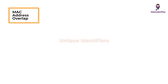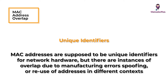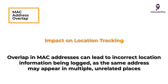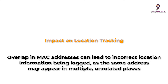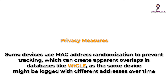MAC address overlap — Unique identifiers: MAC addresses are supposed to be unique identifiers for network hardware, but there are instances of overlap due to manufacturing errors, spoofing, or reuse of addresses in different contexts. Impact on location tracking: overlap in MAC addresses can lead to incorrect location information being logged, as the same address may appear in multiple unrelated places. Privacy measures: some devices use MAC address randomization to prevent tracking, which can create apparent overlaps in databases like Wigle, as the same device might be logged with different addresses over time.